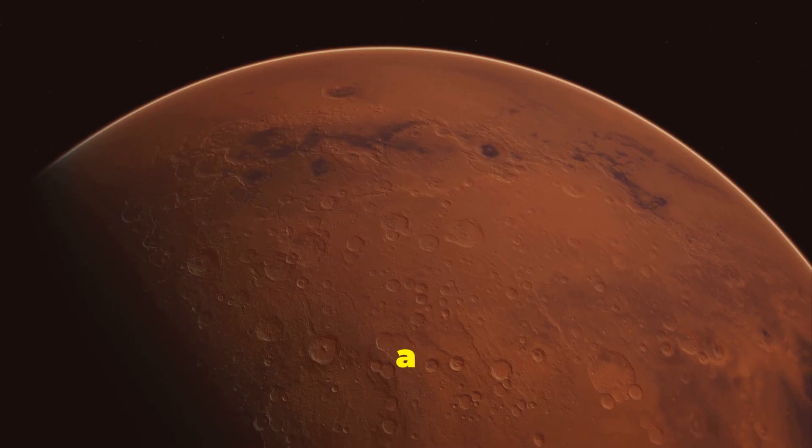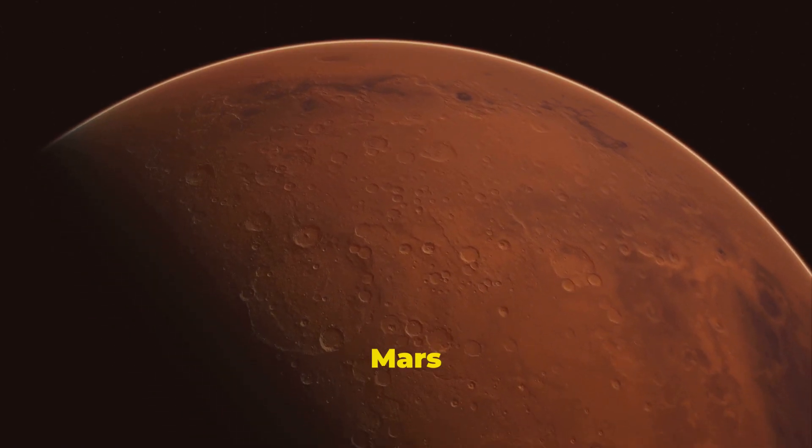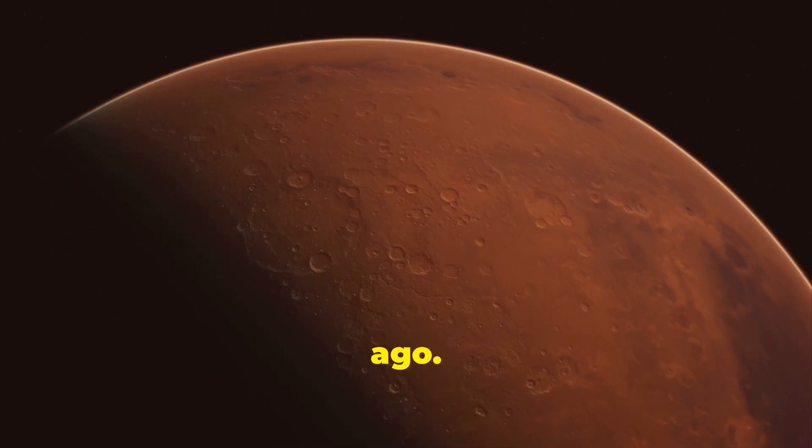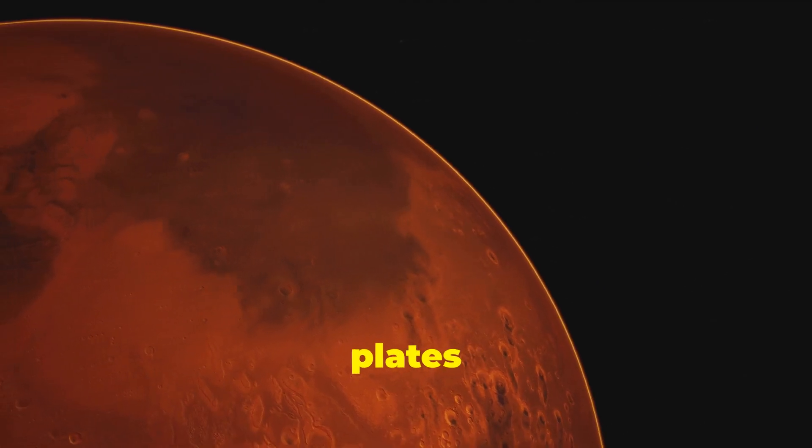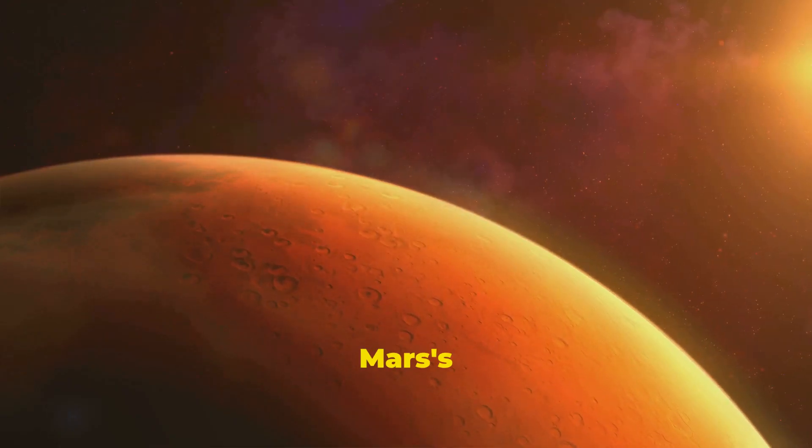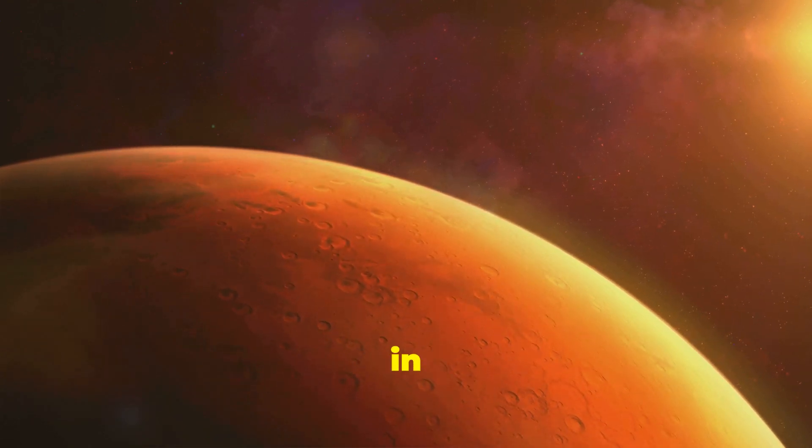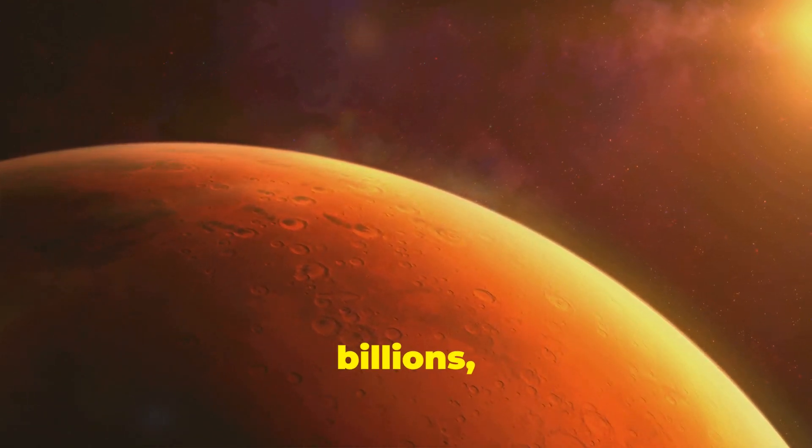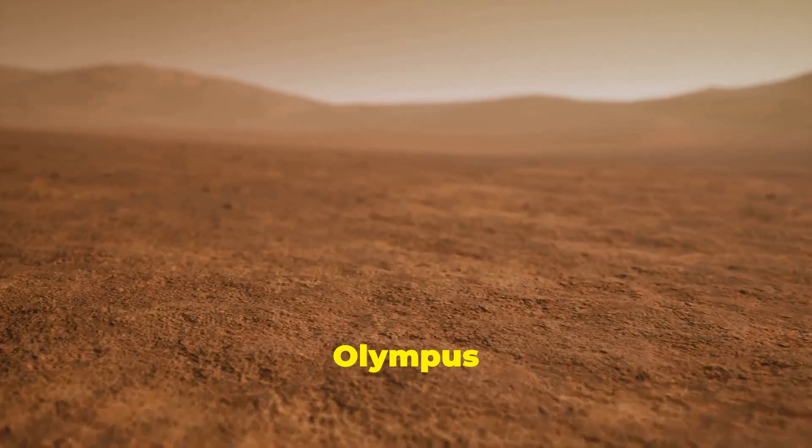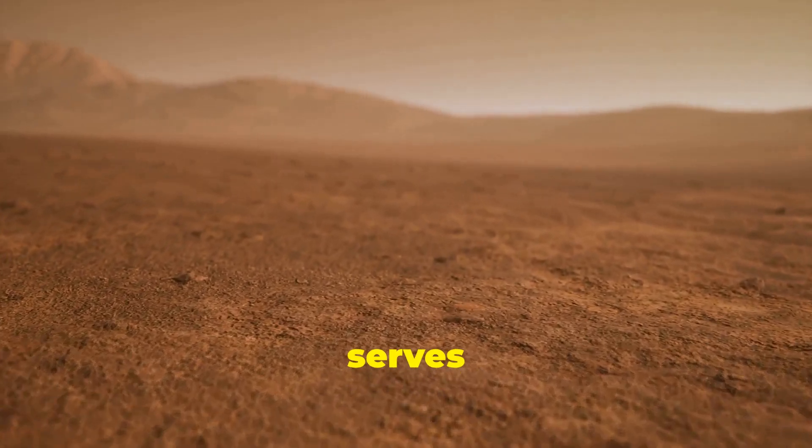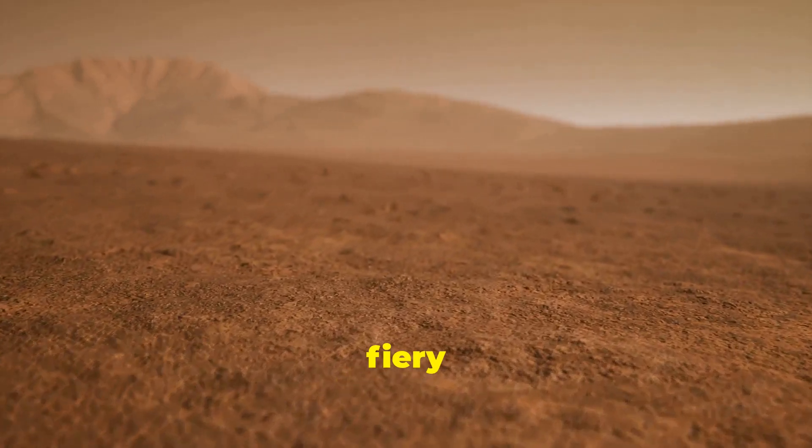Olympus Mons is a testament to the incredible geological forces that shaped Mars billions of years ago. Unlike Earth, where tectonic plates constantly shift and move, Mars's crust is believed to have remained stationary, allowing volcanoes to erupt in the same location for millions even billions of years. While Olympus Mons is now dormant, its presence serves as a reminder of Mars's fiery past.